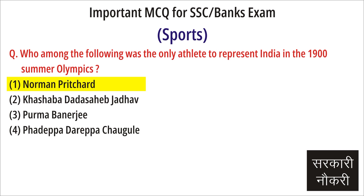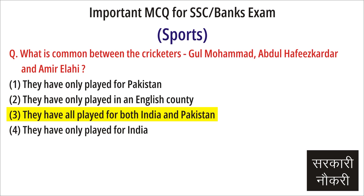Question: Who among the following was the only athlete to represent India in the 1900 Summer Olympics? Answer: Norman Pritchard.